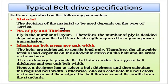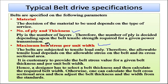Belts are specified on the following parameters: first, the material of the belt, which depends upon the type of service; second, the number of plies and the thickness; and third, the maximum belt stress per unit width. The number of plies is decided depending upon the belt tensile strength required for a given power transmission. Belts are subjected to tensile load only, and therefore the allowable tensile load depends on the allowable stress and the cross-sectional area.